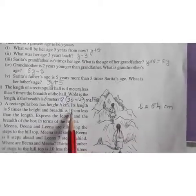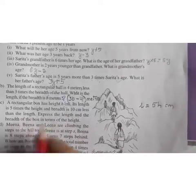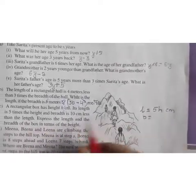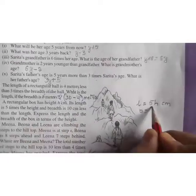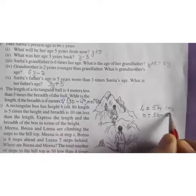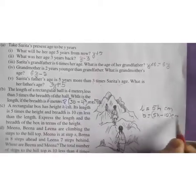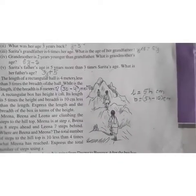And breadth is 10 centimeters less than the length. So breadth will be 10 centimeters less than length. Length is this much. And less than this by 10 centimeters. So you will write 5H minus 10. Is it understood?